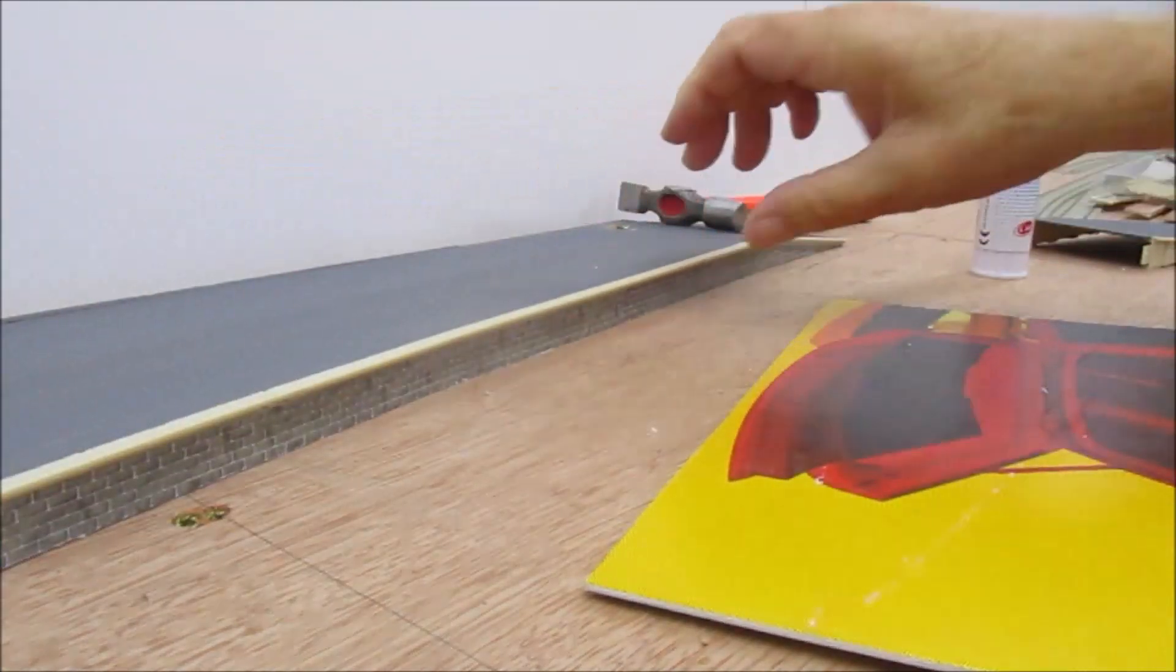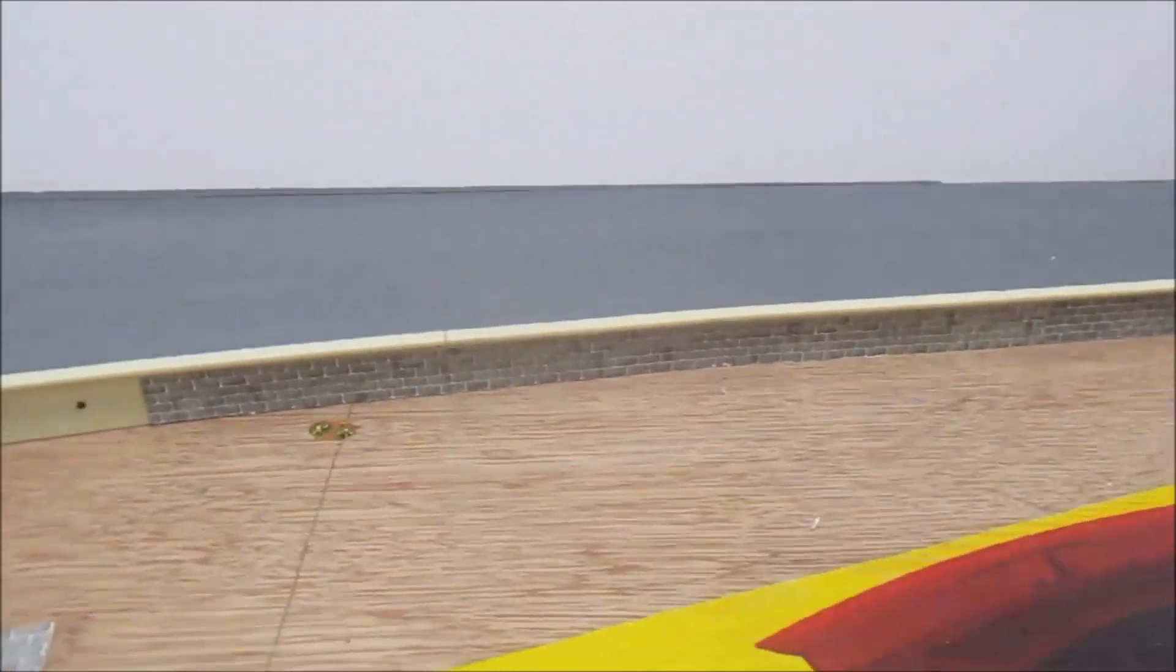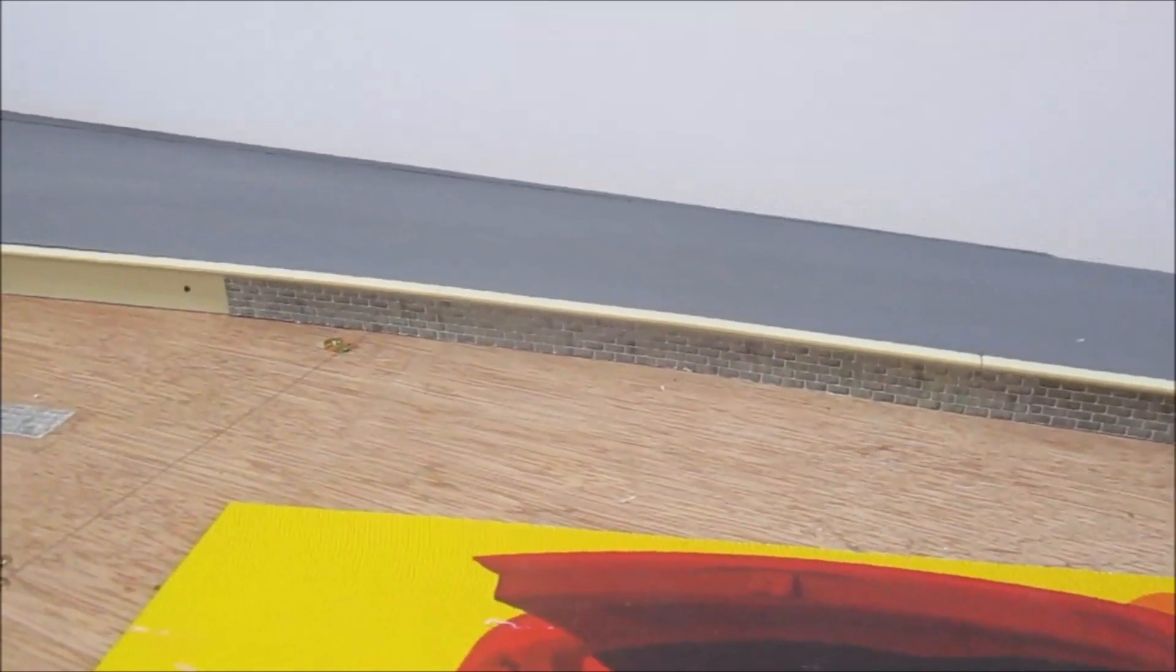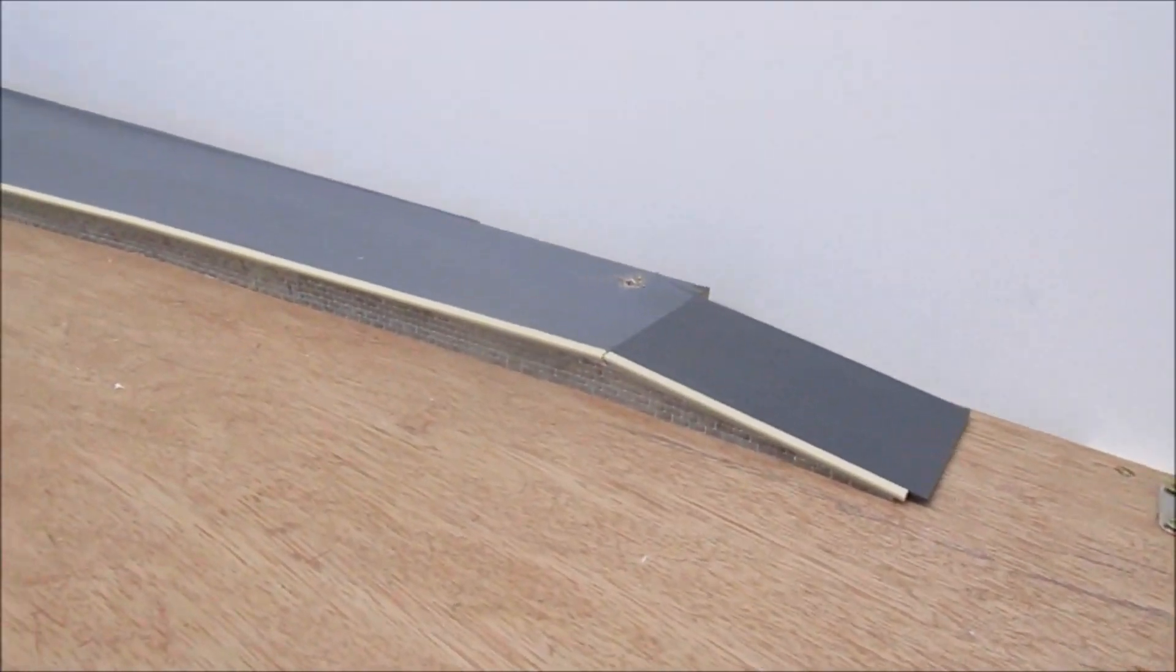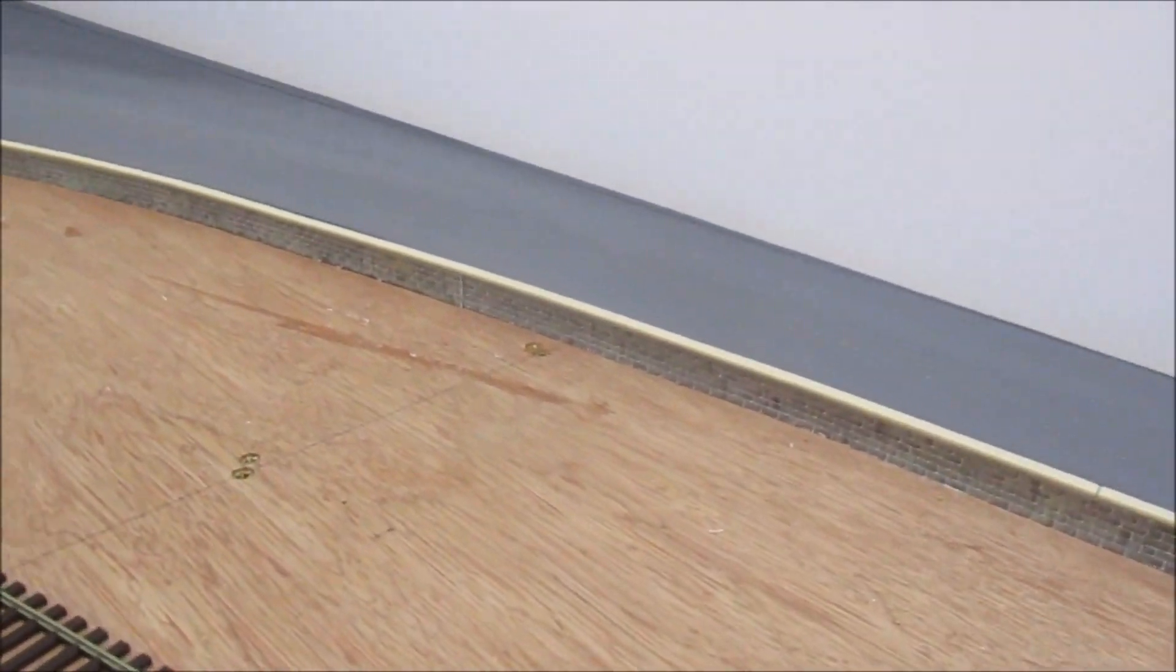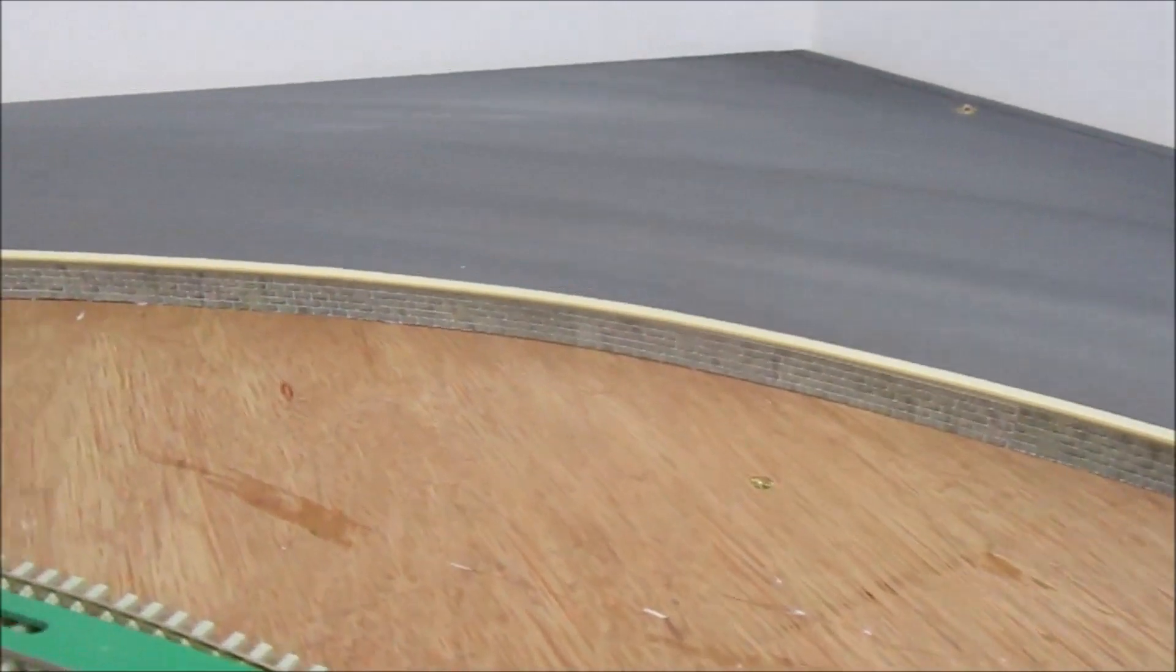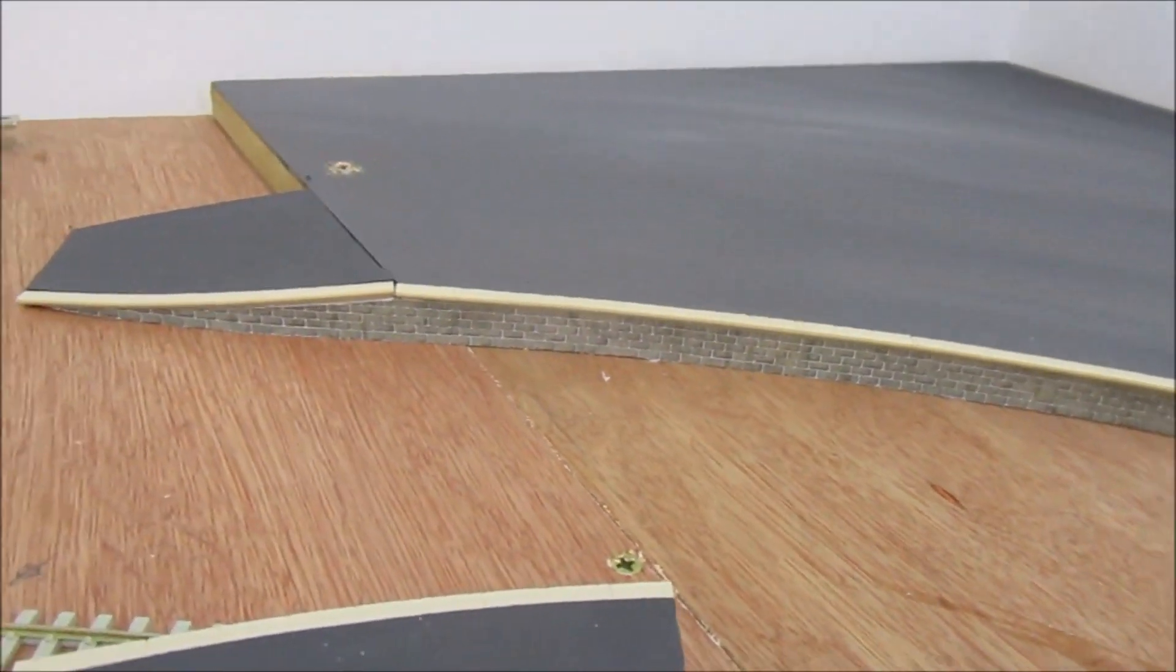That's going on there and as you can see, you can't see the join, absolutely brilliant. So I'll carry on doing this now. Platform one, the edging's on and we're all done. Looks quite nice and neat and tidy.